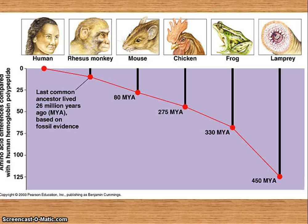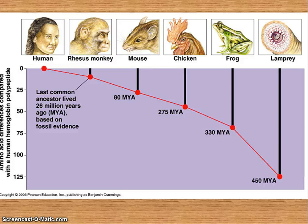The more similarities you have within the DNA or the amino acid sequences, the more closely you are related. And you can kind of use it as a timeline to see exactly how many million years ago we have diverged or evolved separately.